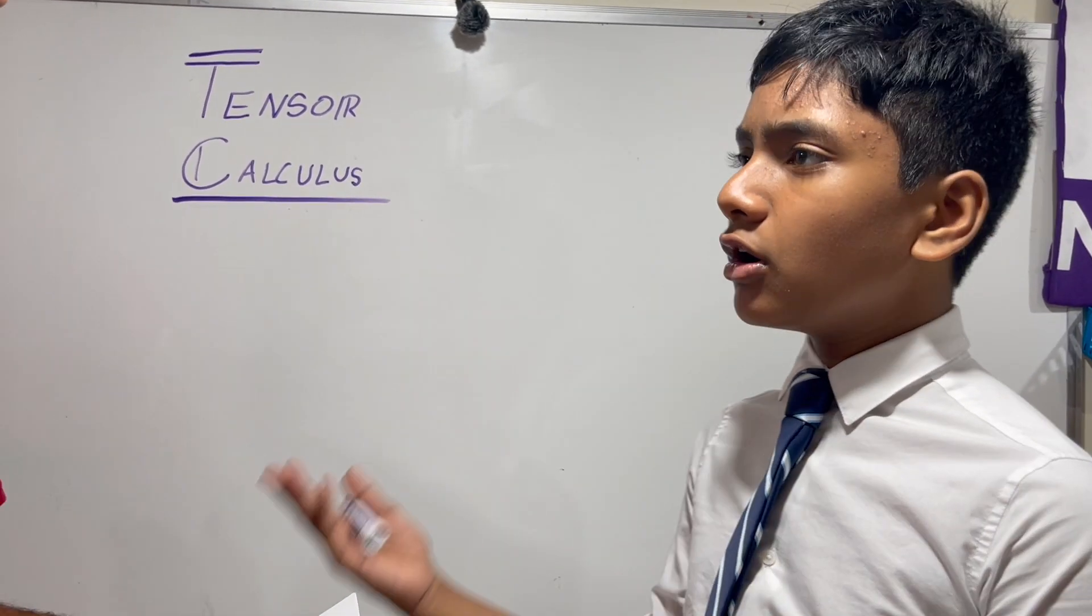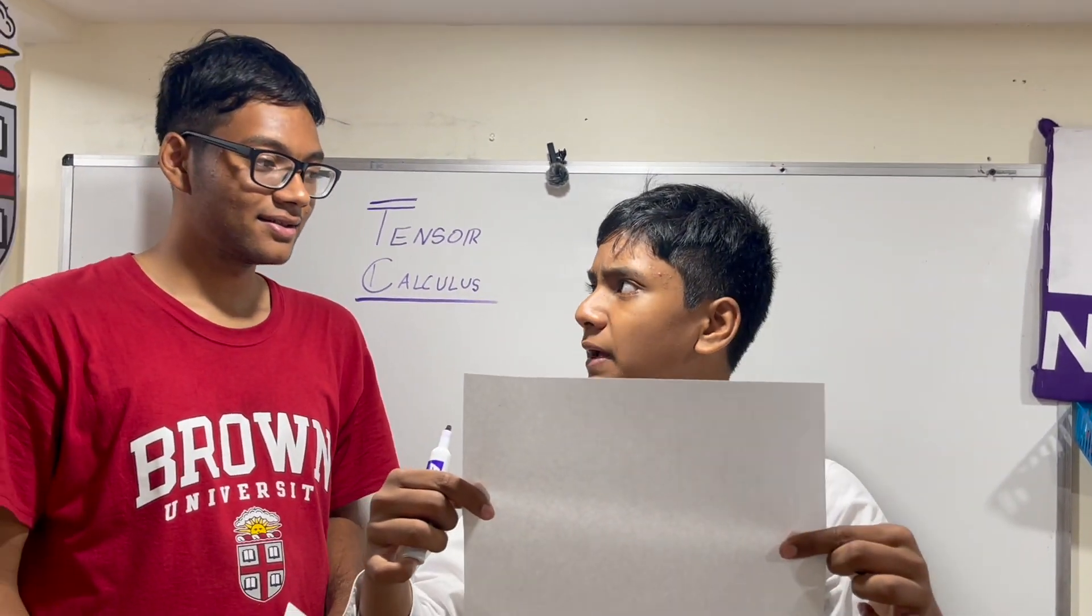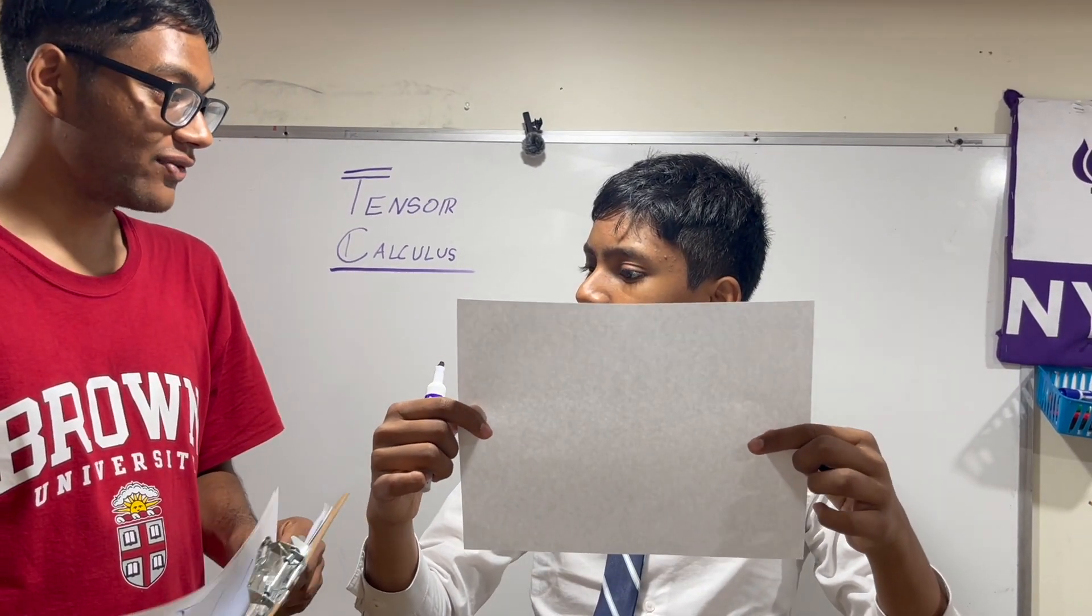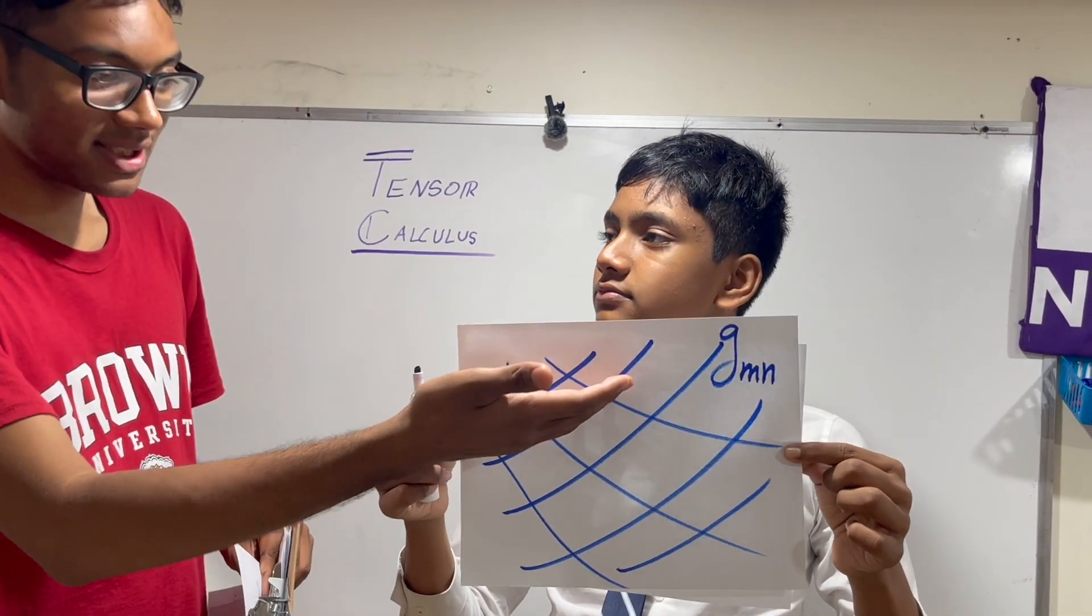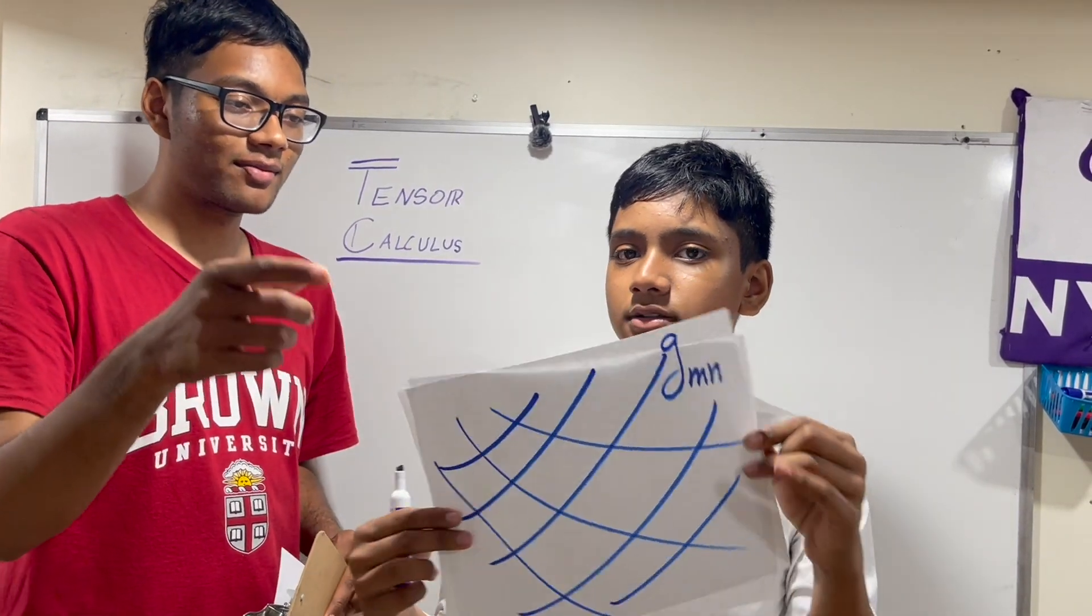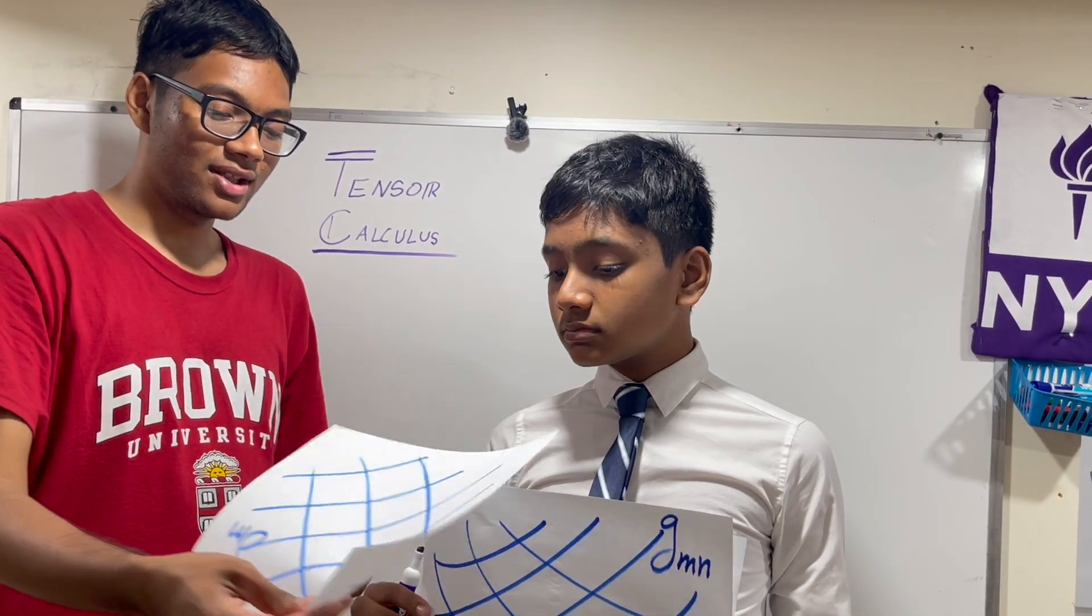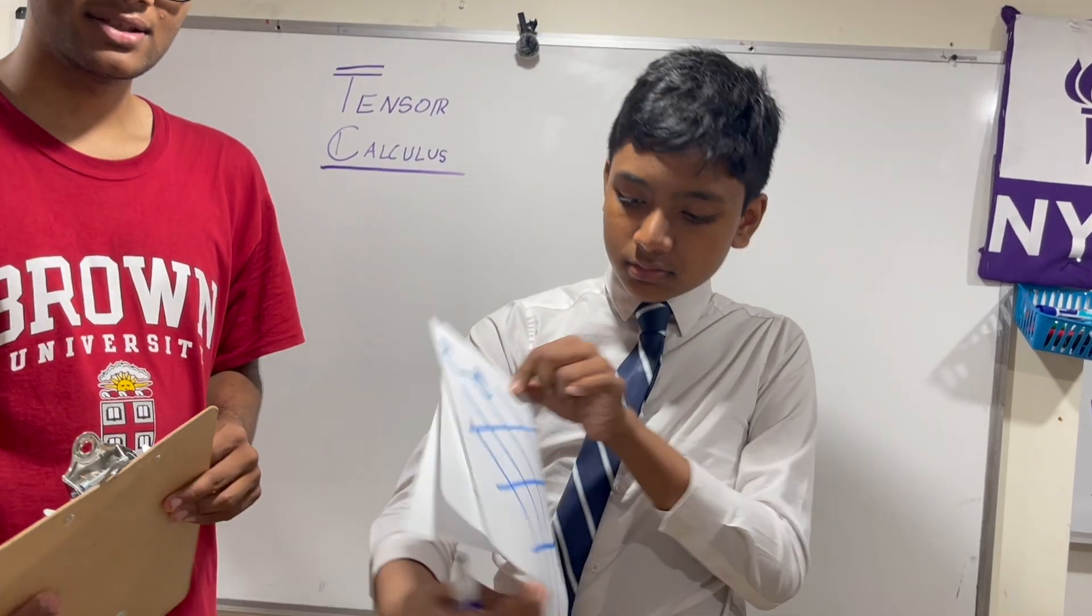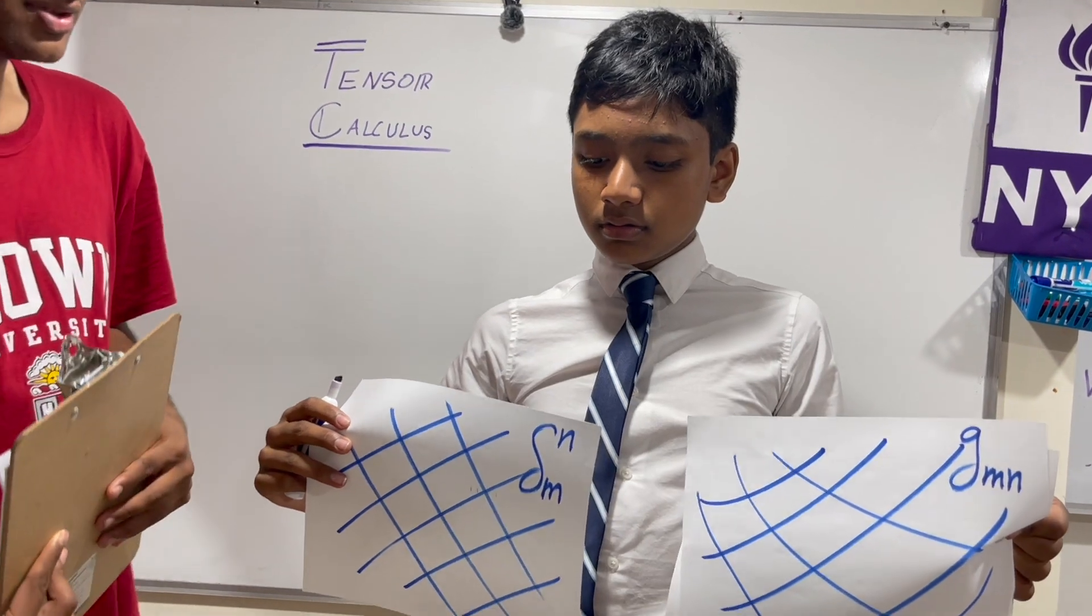So why don't we start off with a sheet of paper. Show this paper to the viewers. How do we know this paper is flat exactly? Now, we can describe this paper using different coordinate systems. For example, we can describe it with a curvilinear coordinate system. Take a look at this coordinate system. Yep, looks pretty nice. It's described by a metric G sub MN, right? Or you can describe it with a Cartesian coordinate system. Looks pretty straight. That looks like this. Okay, all of the coordinates are orthogonal. Can you tell me what the difference between these two are?